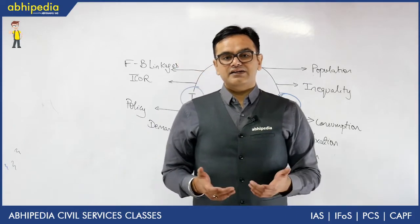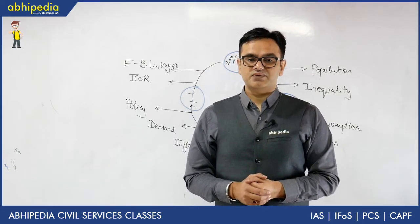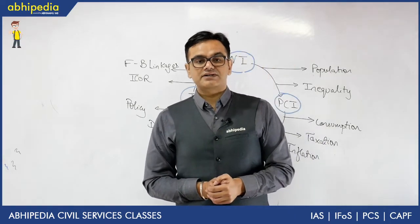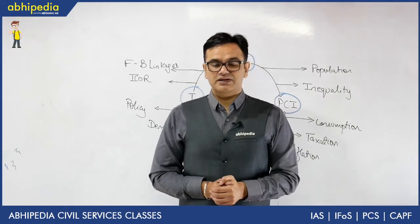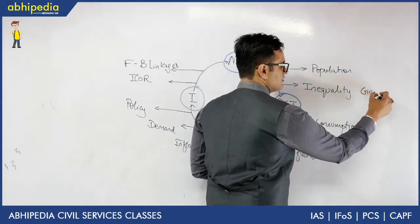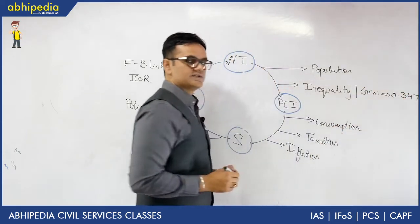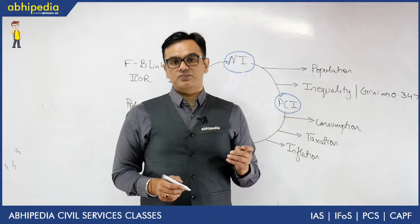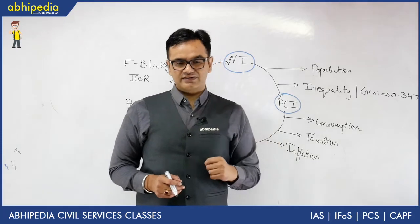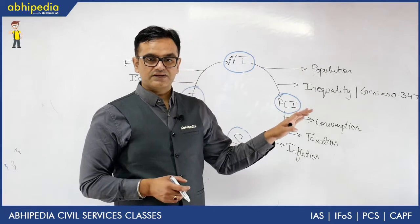If you look at the inequality in India, one fair measure is the Gini coefficient. We have been progressively reducing inequality as far as income inequality is concerned. The World Bank measures this Gini coefficient with respect to inequality, and that Gini coefficient for India is right now somewhere near 0.347 for 2019. Previously it used to be around 0.36 in 2011. So you can see a very slow pace of inequality reduction has taken place, and income inequality is still a concern as far as per capita incomes are concerned.